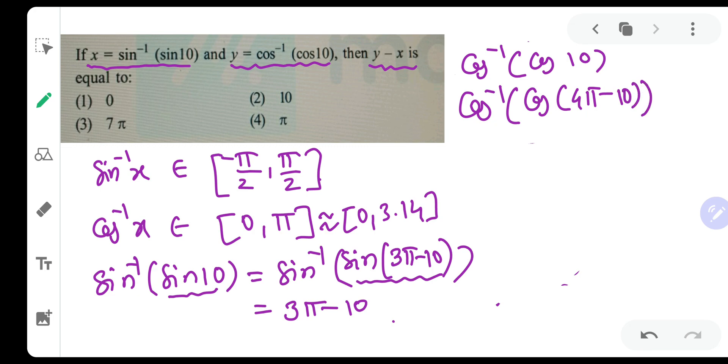Let us do it orally. Cos of 4 pi minus 10 will be equal to cos 4 pi cos 10 plus sin 4 pi sin 10. So that comes out to be cos 4 pi is 1 cos 10. So our answer will be equal to 4 pi minus 10.